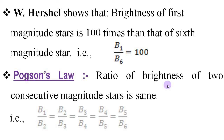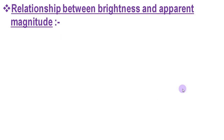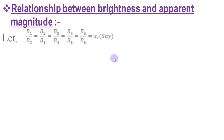In 1856, Pogson showed that the ratio of brightness of consecutive magnitude stars is the same. That is, b₁/b₂ = b₂/b₃ = b₃/b₄ = b₄/b₅ = b₅/b₆. This is known as Pogson's law. From Pogson's law, we have to find the relationship between brightness and apparent magnitude of a star. According to Pogson's law, the ratio of brightness of two consecutive magnitude stars is the same.